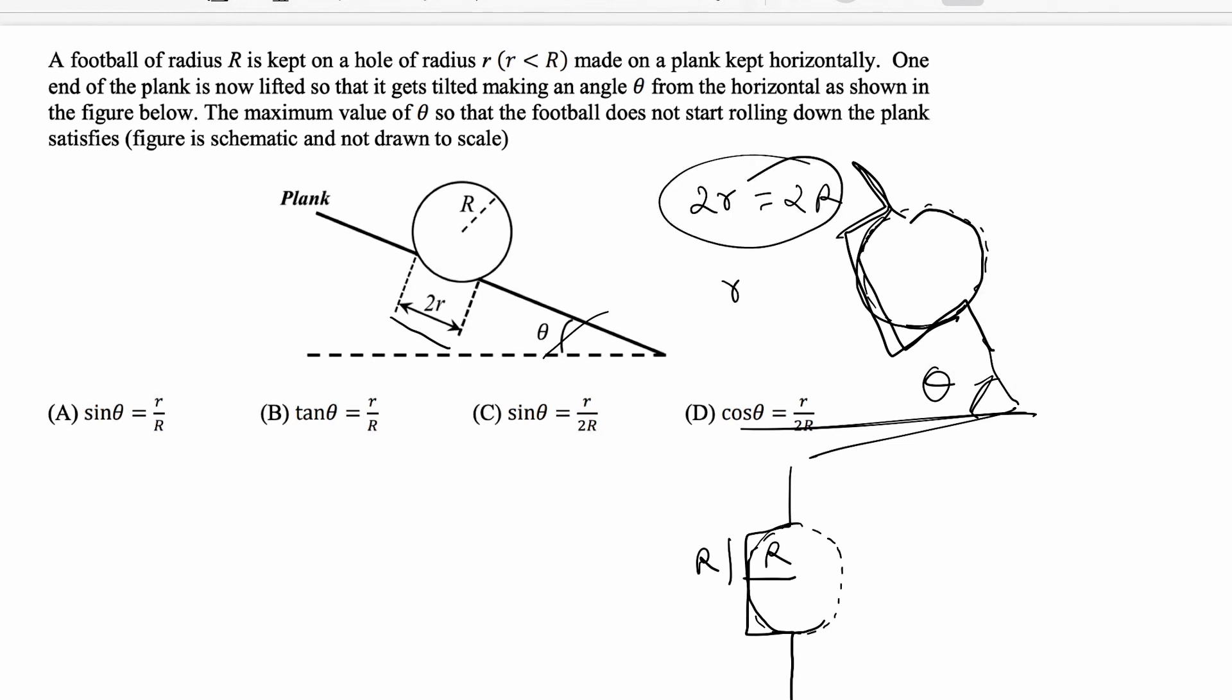gives 90 degrees. Option one: sine theta equals r by r, which is one, and theta gives 90 degrees - correct. This is no, this is no.